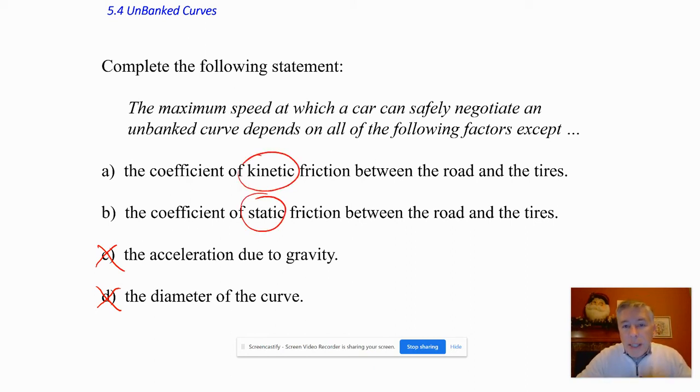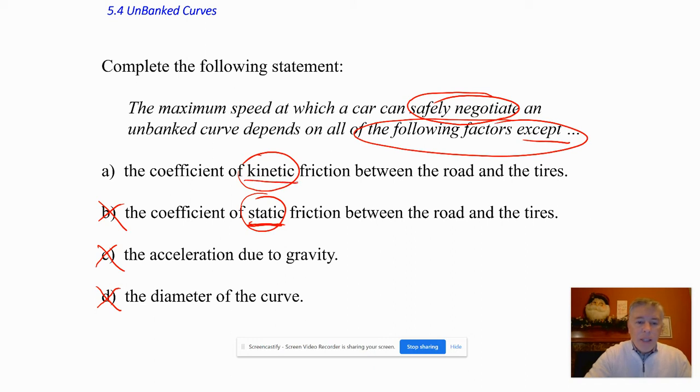Kinetic is actually sliding friction when you're actually sliding. I don't want this car to actually slide if it safely negotiates or makes it around the curve. So it can't be kinetic friction. It has to be static friction that it's actually being dependent on. We do not want it to slide if it's going to negotiate. So I would say it depends on all the following except kinetic friction. A would be the correct answer.